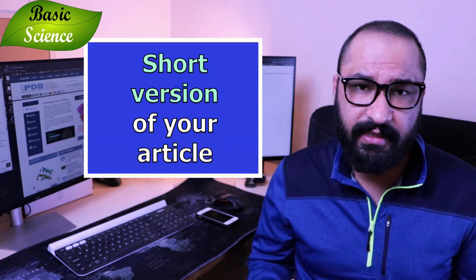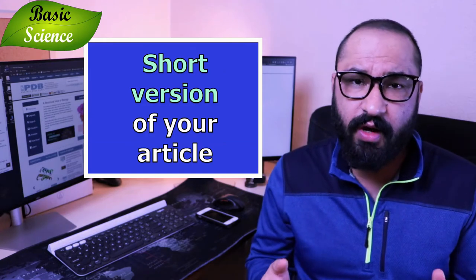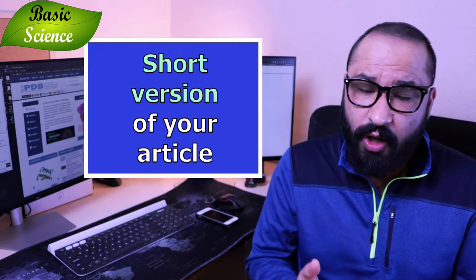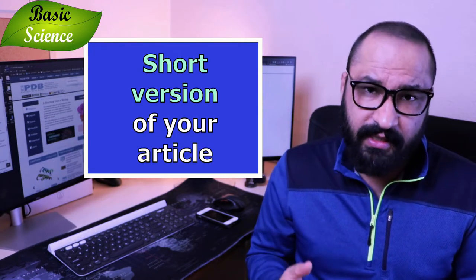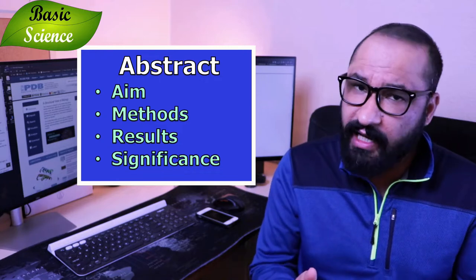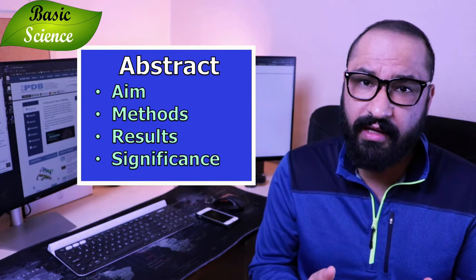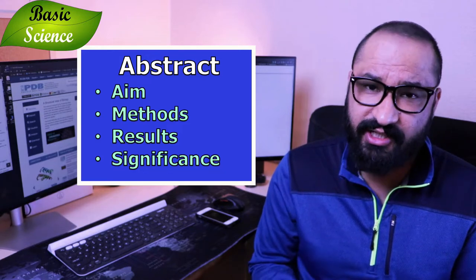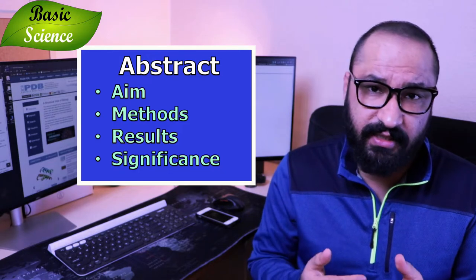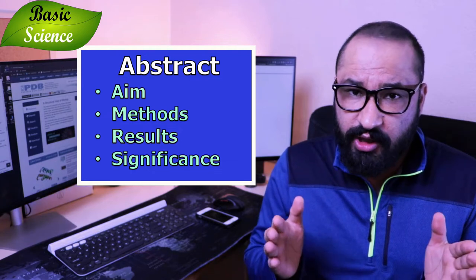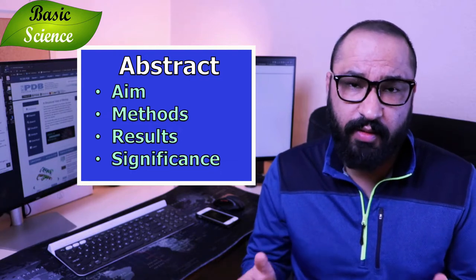So what is an abstract? An abstract is basically a short version of your full research article. An abstract has all the components that a research article has — for example, it will have a short introduction, a short method section, a short result section, as well as a discussion and significance section.